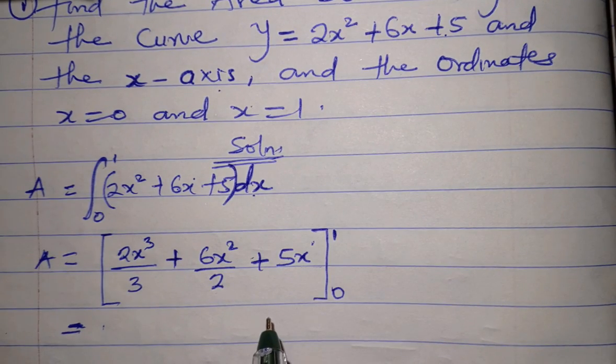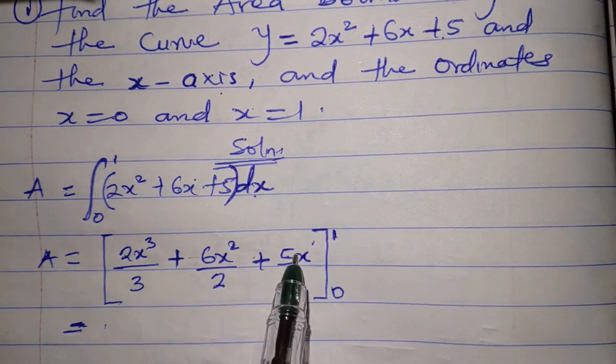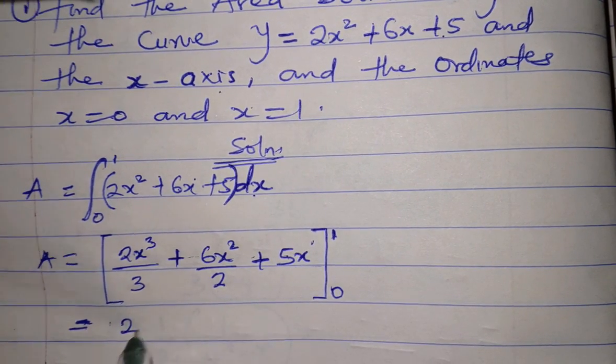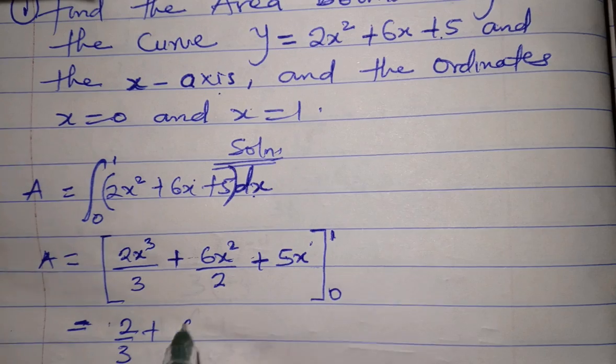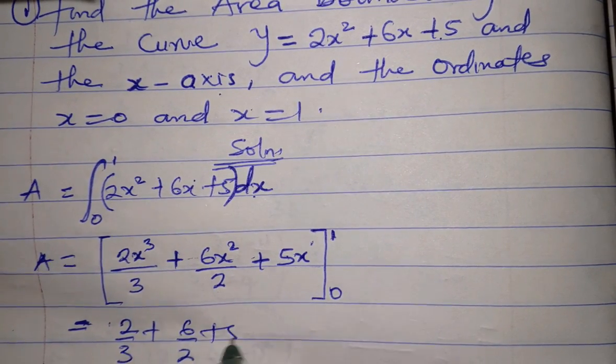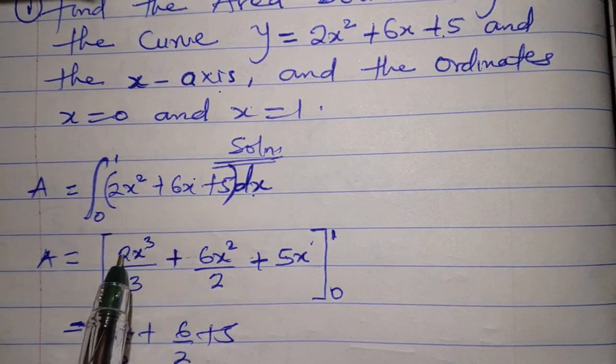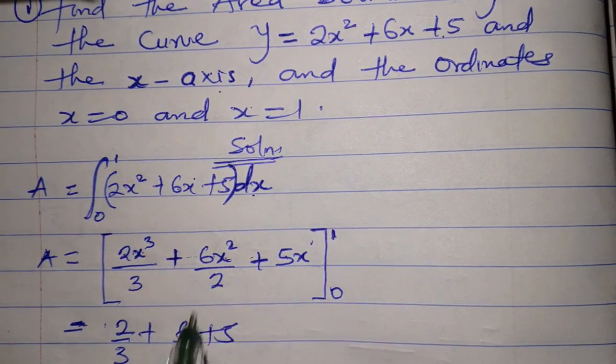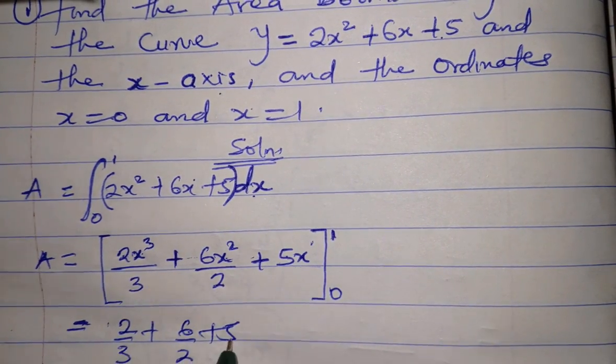So let's evaluate. Let's put 1 for x first. When we substitute 1, we get 2/3 plus 6/2 plus 5. 1 cubed is 1, 2 times 1 is 2. 1 squared is 1, 6 times 1 is 6. 5 times 1 is 5.